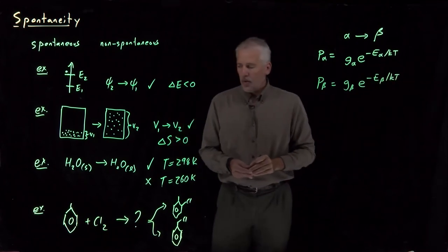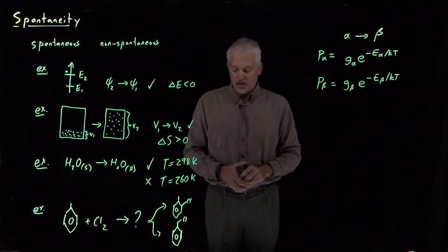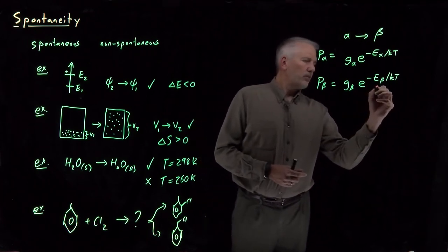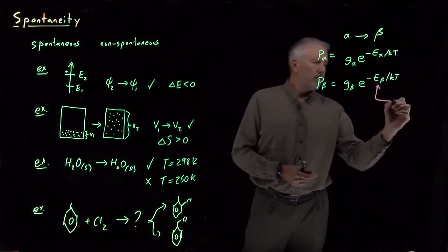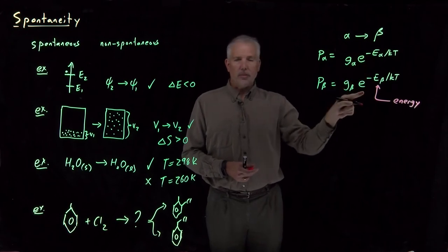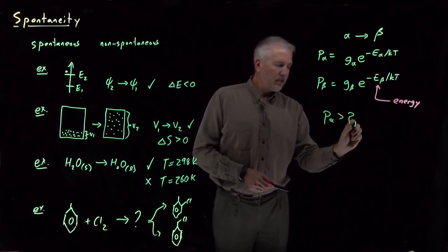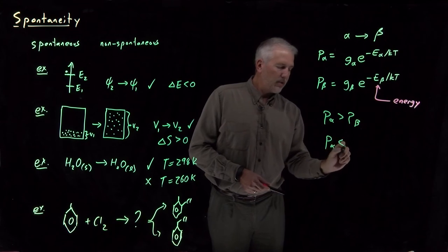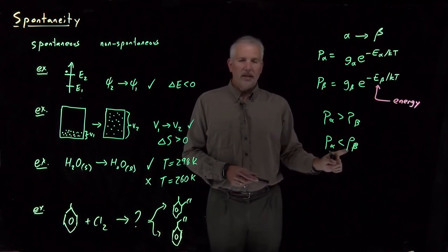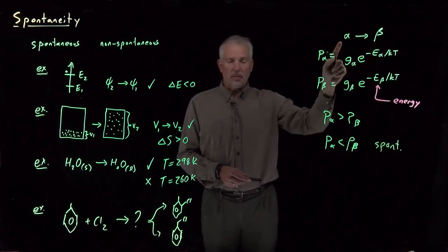So here's the key to understanding why some processes, in particular the most interesting chemical processes, are spontaneous or not, depending on the conditions, because of this conflict between the energy and the entropy. In fact, this energy term explains how the energy comes into play. If the energy of alpha is bigger than or smaller than beta, that can determine which of these two probabilities is greater. In general, it's certainly going to be true that if the probability of alpha is bigger than the probability of beta, or the other way around, let's in fact consider this second possibility first. If the probability of beta is bigger than the probability of alpha, then that will be a spontaneous reaction. The probability of seeing this one is larger than the probability of seeing this one.